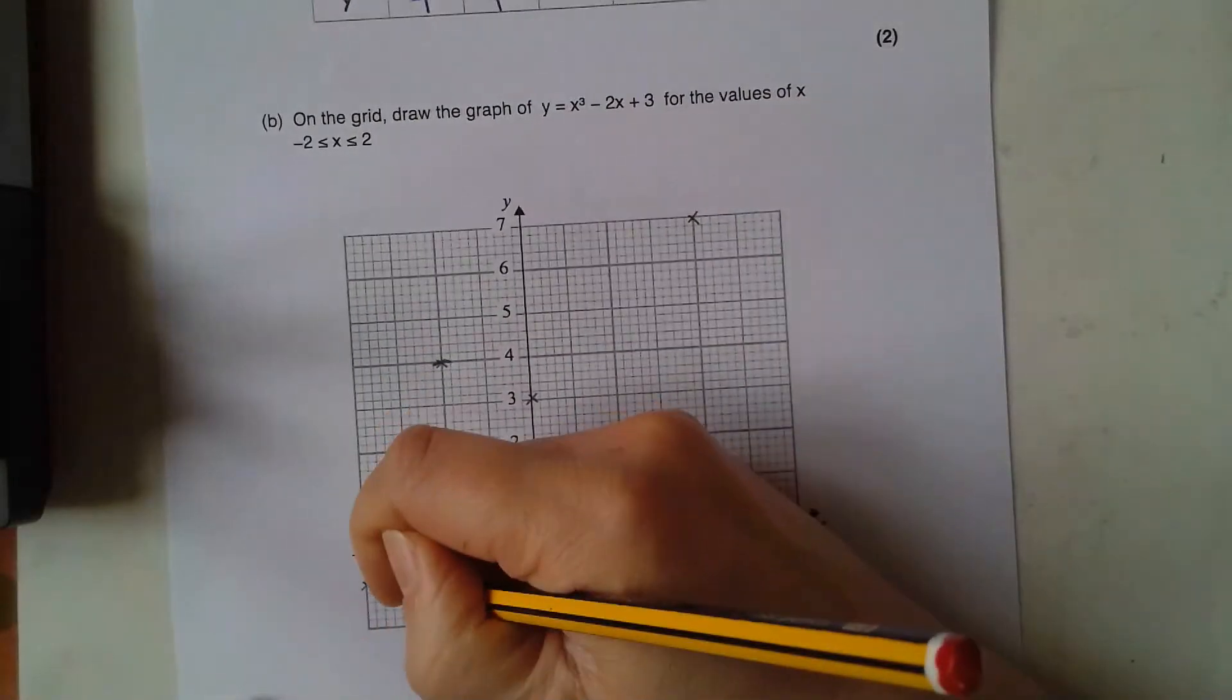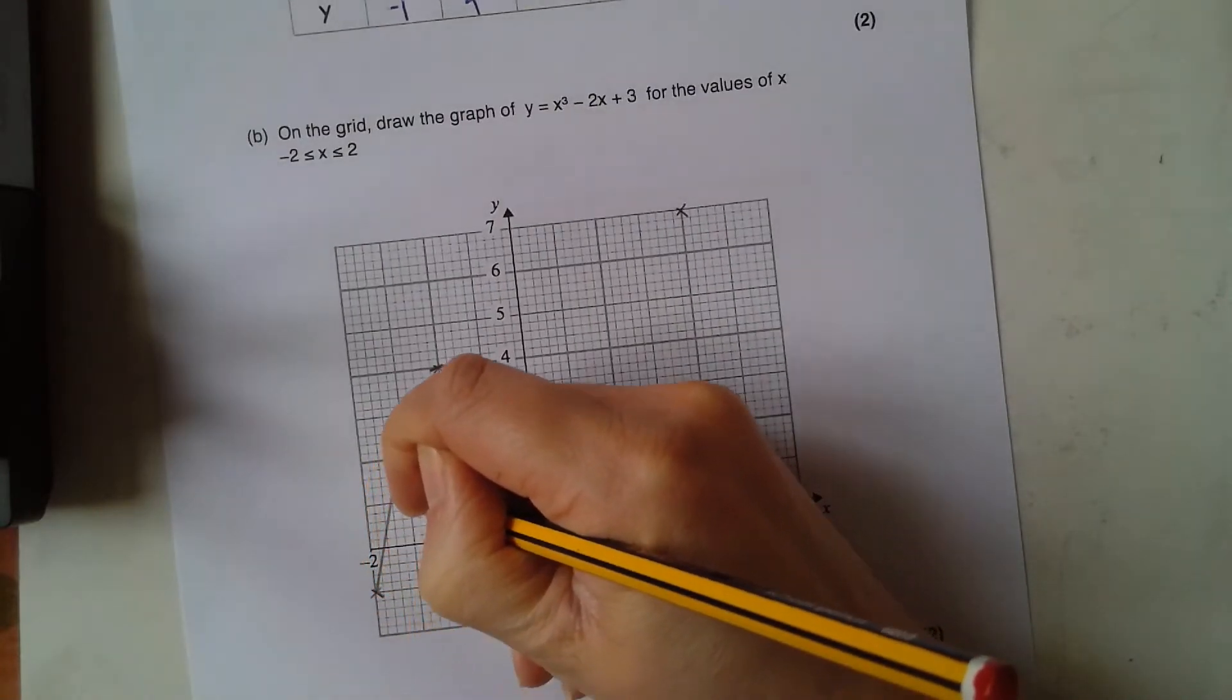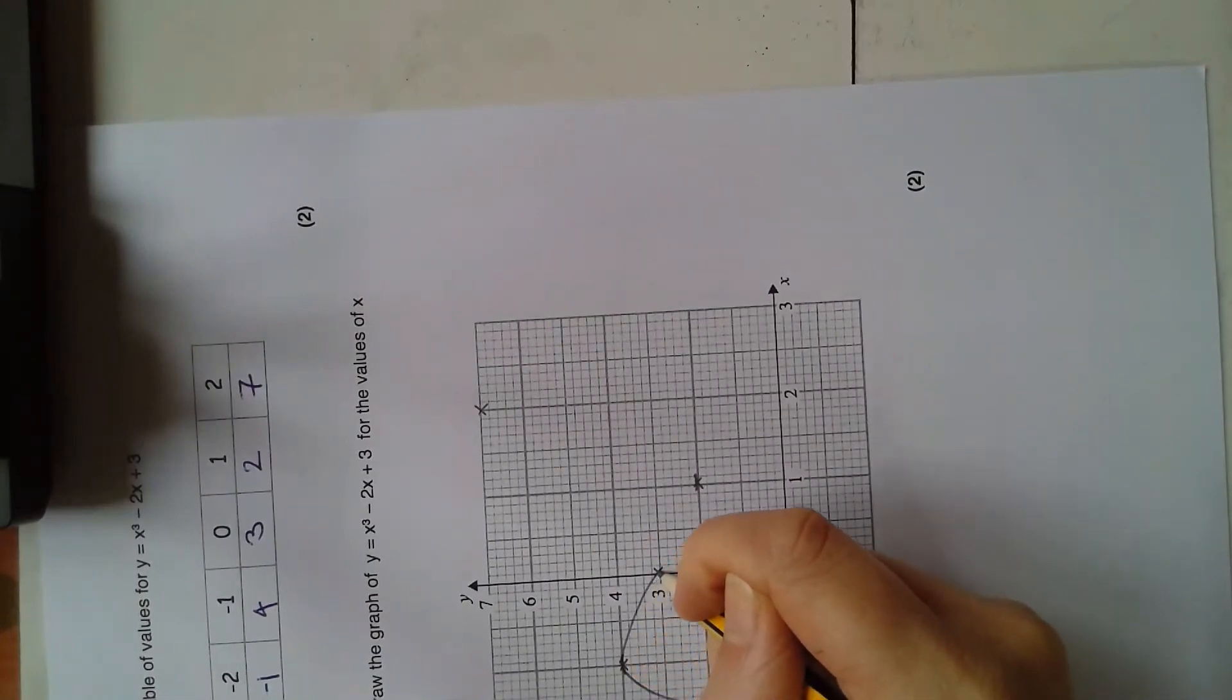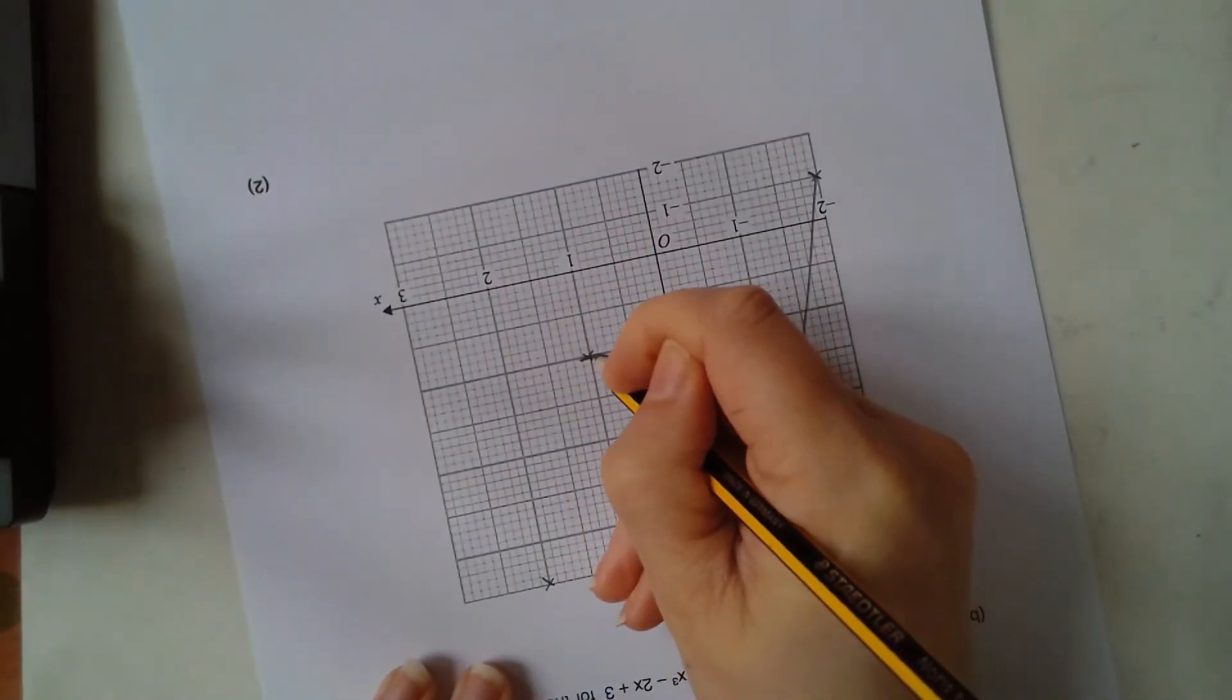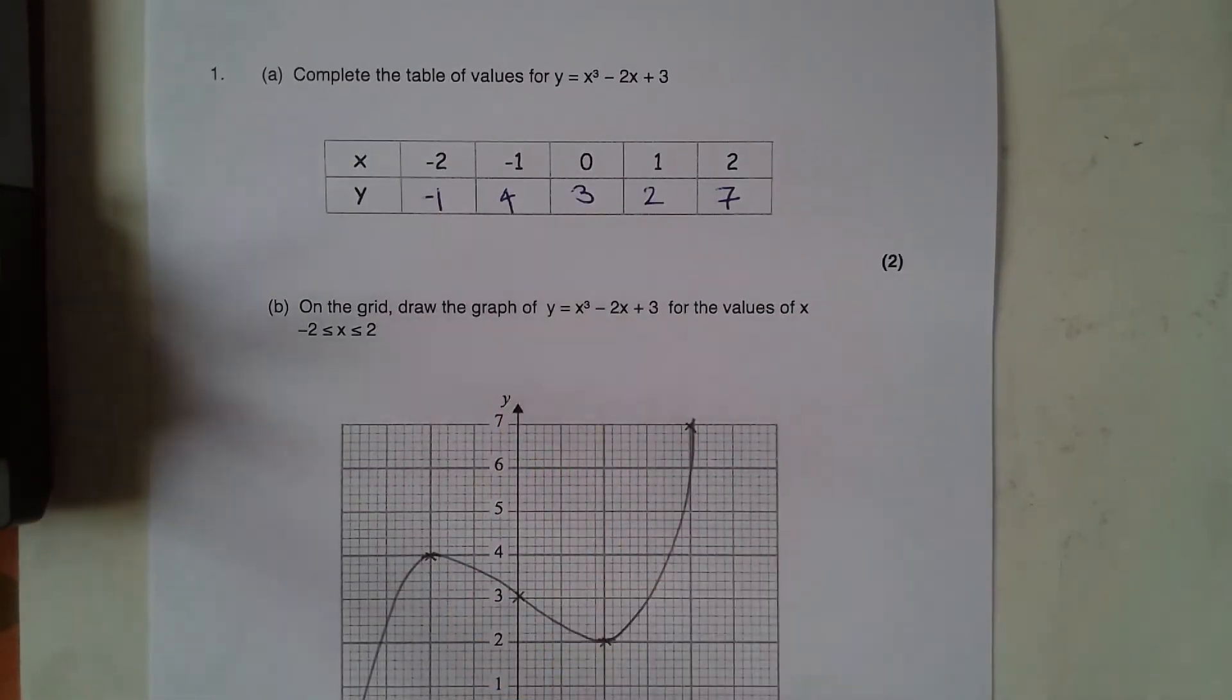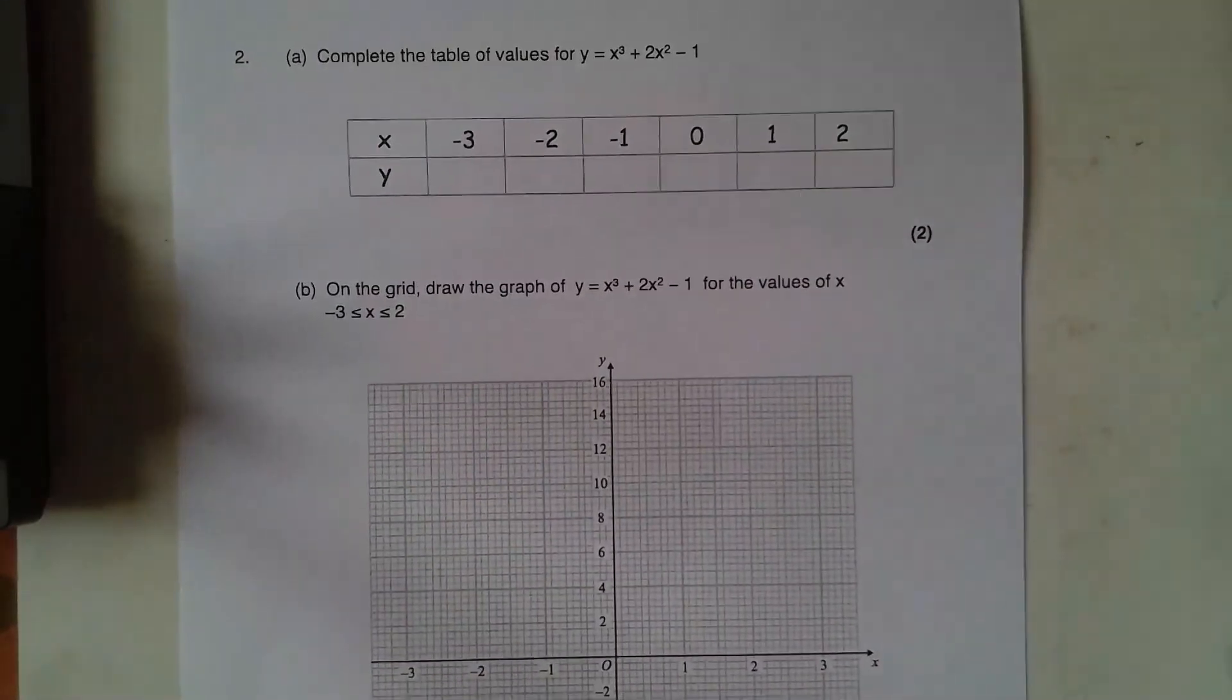To help me with that I'm just going to do everything freehand and see how it goes. Rotate my page, make sure I go through each of my points. Here we go, nice smooth deliberate curve. There we go, so that is my curve for the graph of y equals x cubed subtract 2x plus 3 from negative 2 up to 2.